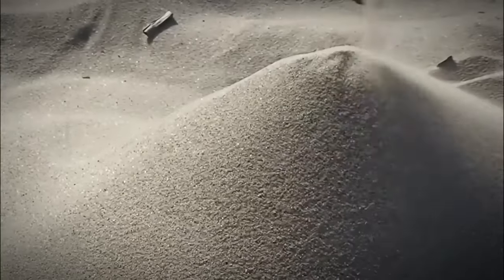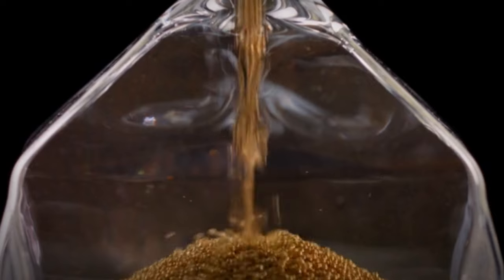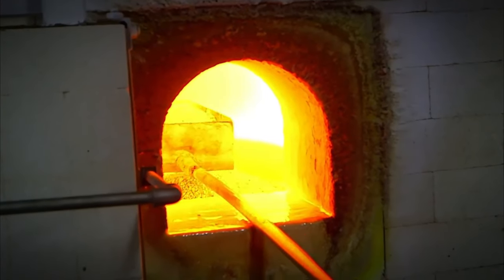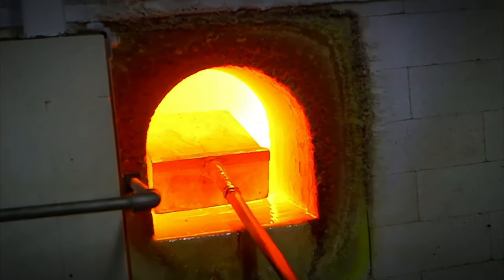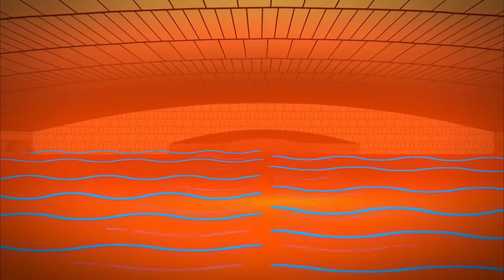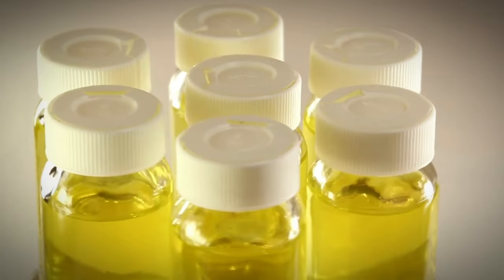Free sand is collected from natural sources and then mixed with soda ash and limestone in a specific ratio. This mixture is placed in a furnace and heated to temperatures ranging between 1700 degrees Celsius and 2000 degrees Celsius, causing the materials to melt into a liquid glass solution.